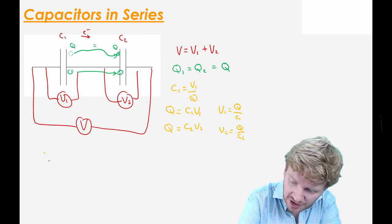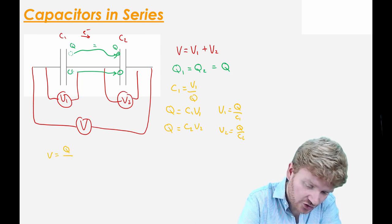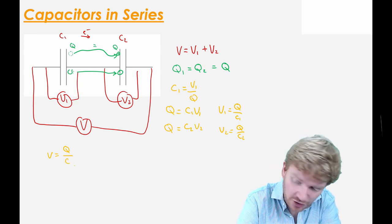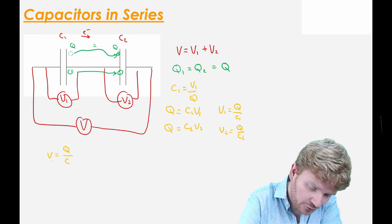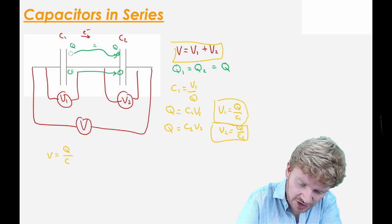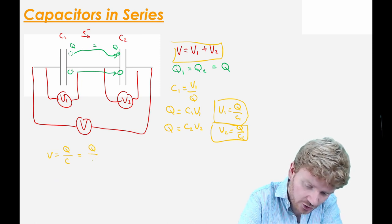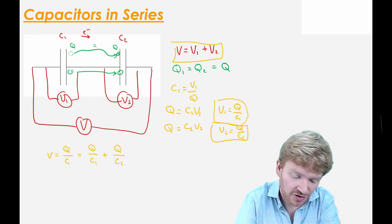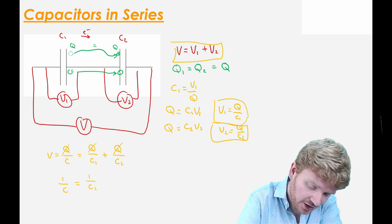I know that the overall voltage — the voltage across both of them — is equal to the charge, which is the same on both, divided by their total capacitance. That voltage also equals V1 plus V2. So I can say Q/C_total = Q/C1 + Q/C2. Because all of these Qs are the same, that's a common factor I can take out, giving 1/C_total = 1/C1 + 1/C2.